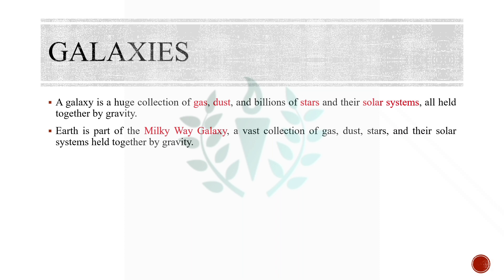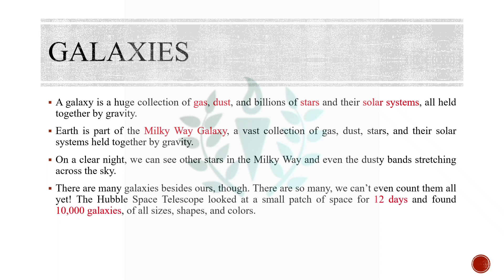Earth that we live on is a part of the Milky Way galaxy, which is a vast collection of gas, dust, stars, and their solar systems held together by gravity. On a clear night we can see other stars in the Milky Way and even the dusty band stretching across the sky, given if we are in remote areas far away from pollution where environmental or air pollution is as minimum as possible.